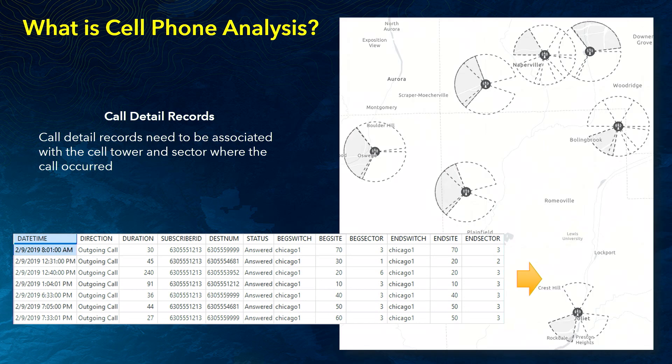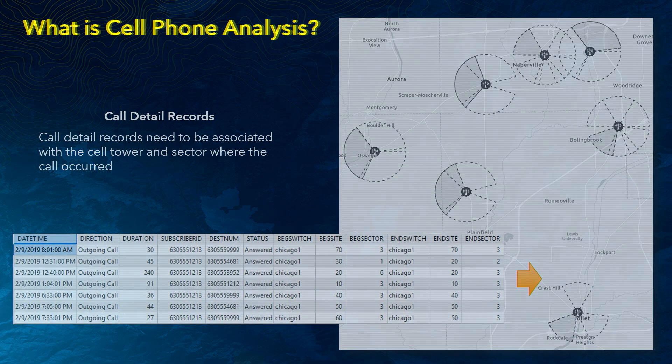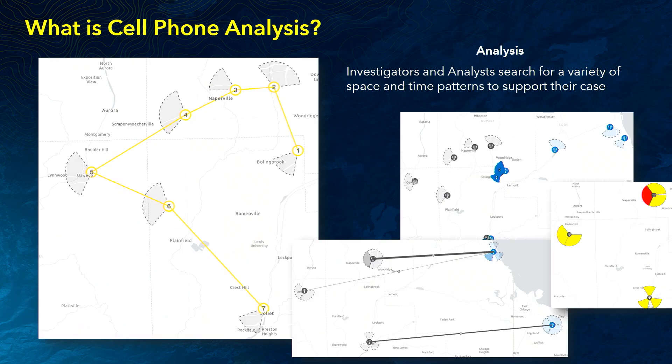Once the cell towers and sectors have been mapped and the call detail records associated to them, we can then perform a wide variety of analyses to uncover the spatial and temporal patterns that support the aims of the investigation. Without specialized tools, all of this work can be extremely labor-intensive and time consuming. For many analysts who do not have specialized tools, they try to leverage a variety of off-the-shelf products to do this, and it can be extremely laborious for them.